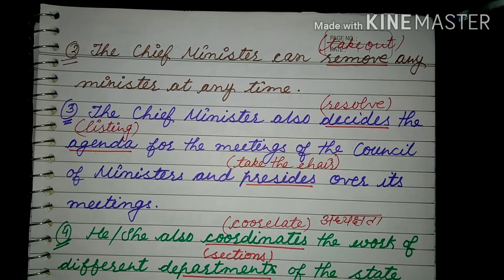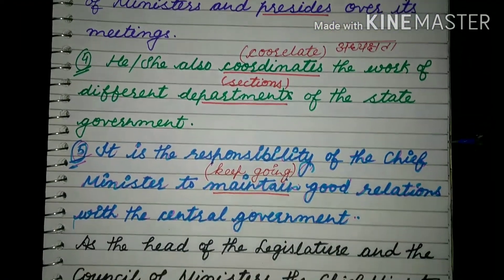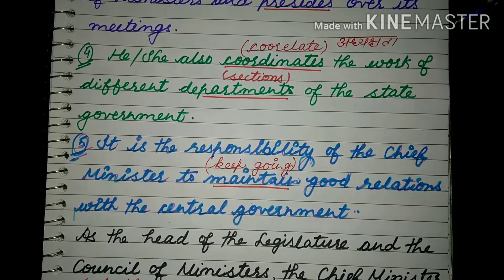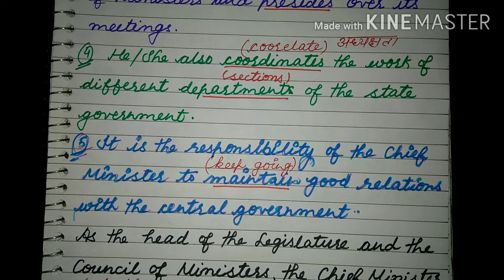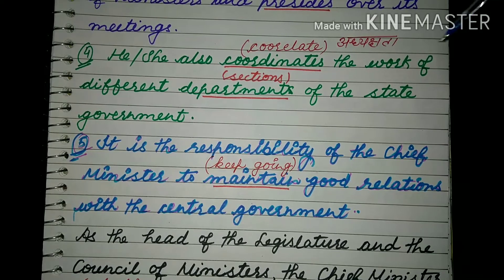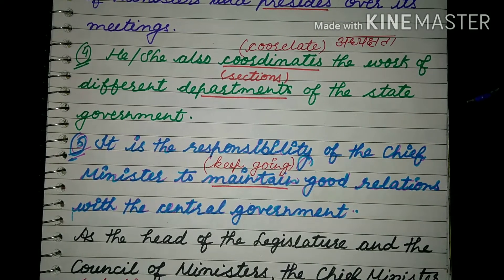He or she also coordinates the work of different departments of the state government — कि जो different departments और sections हैं state government के, राज्य government के जो विभाग हैं, किस-किस minister को कौन-कौन से विभाग देगा — यह chief minister ही coordinate, यानी correlate करता है, अध्यक्षता करता है।